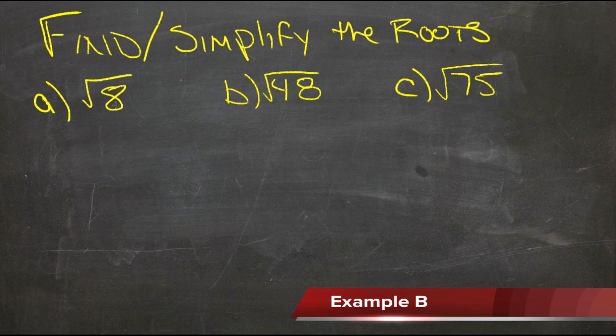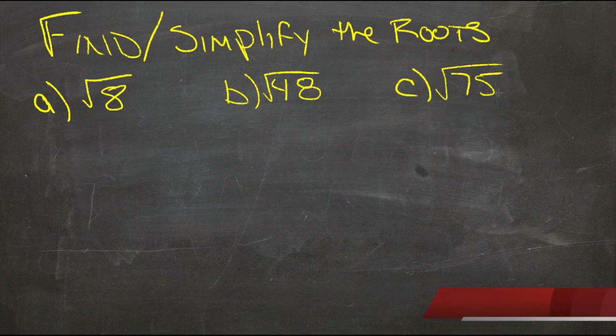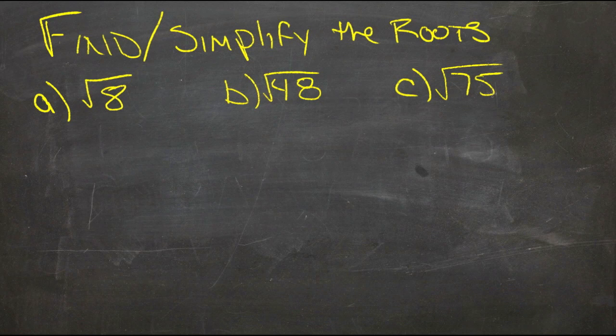8 would be something less than 3 times 3. 48 would be something more than 7, or something a little less than 7 times 7, which is 49. And 75 would be, what, 8 times 8 is 64, or 9 times 9 is 81, somewhere in between those two.